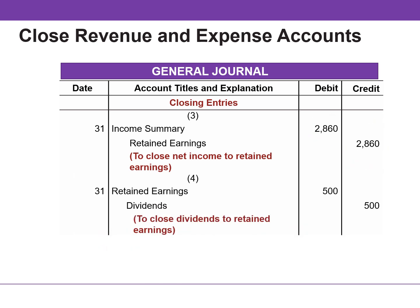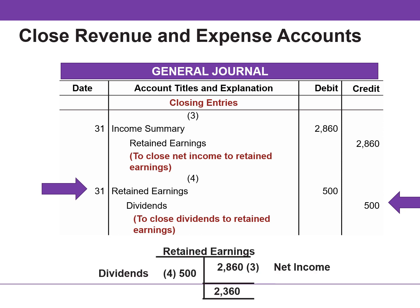The dividends account is closed directly to retained earnings and not to income summary, because dividends are not an expense. After you post these entries, the balance in retained earnings agrees with the retained earnings statement. According to the adjusted trial balance, retained earnings has a balance of zero, but after posting these closing entries, the balance in retained earnings is $2,360 — which agrees with the amount reported on the retained earnings statement.